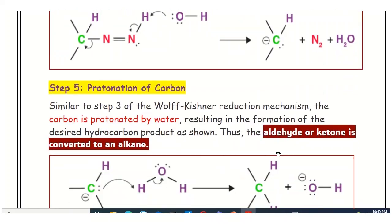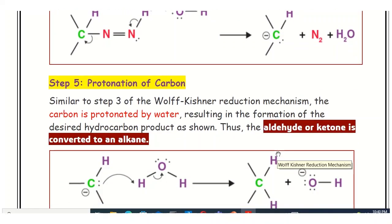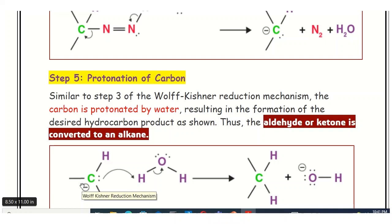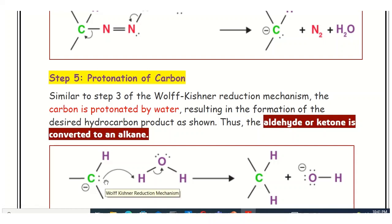Step five is the protonation of carbon, similar to step three. The carbon again has an extra lone pair of electrons, making it a carbanion with a negative charge. It needs a proton, which comes from the water molecule. The carbanion is protonated by water, and in this way it gets converted into the alkane molecule — the desired hydrocarbon product.